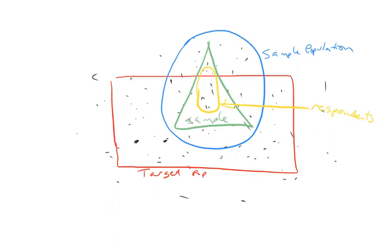One way to think about that is we want a high response rate, but even more importantly, the respondents have to be similar to the sample. The question I want you to think about is: at which of these stages do we have the most control? Is it choosing the target, choosing the sample population, choosing the sample from the sample population, or choosing the respondents from the sample?